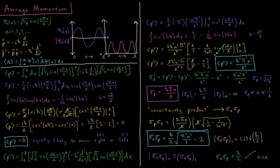Does that make sense? It does, because it says the particle is equally likely to move to the right (positive) or to the left (negative). That makes sense because we saw that our average position was the middle of the box, so the particle is equally likely to go left or right.